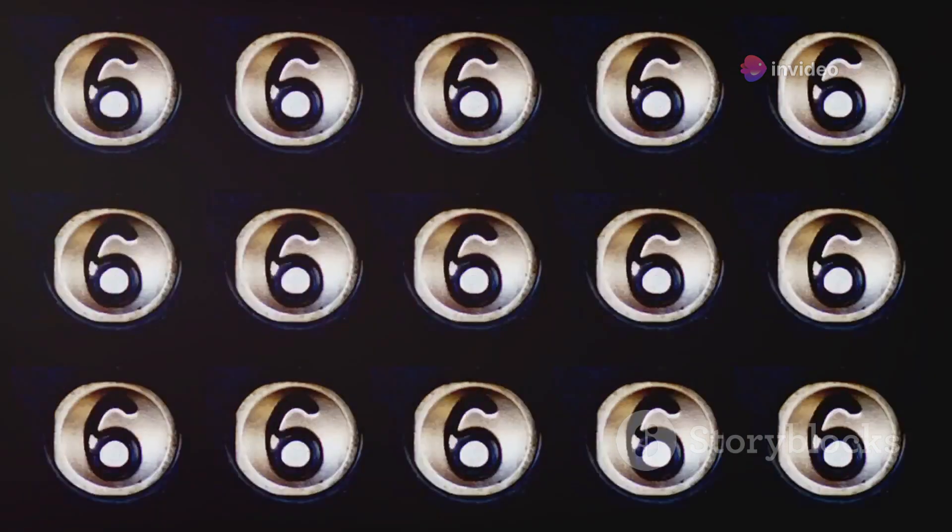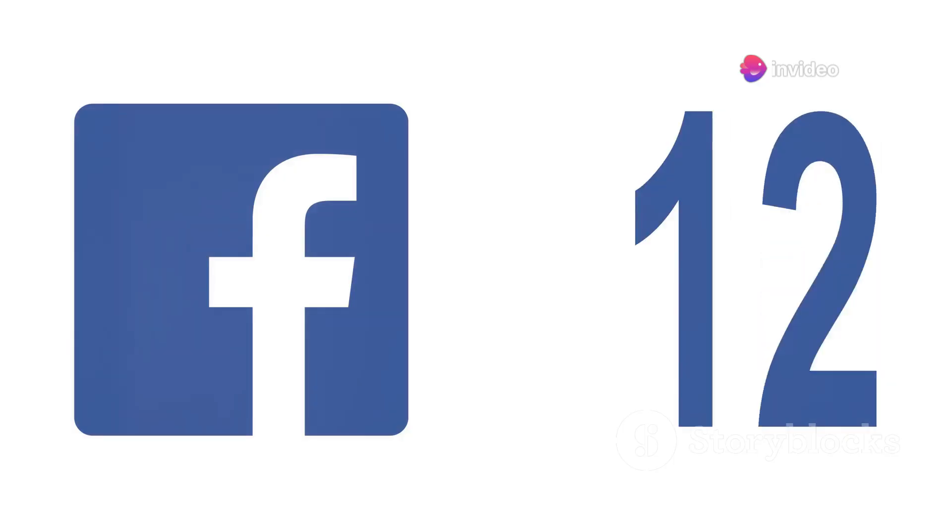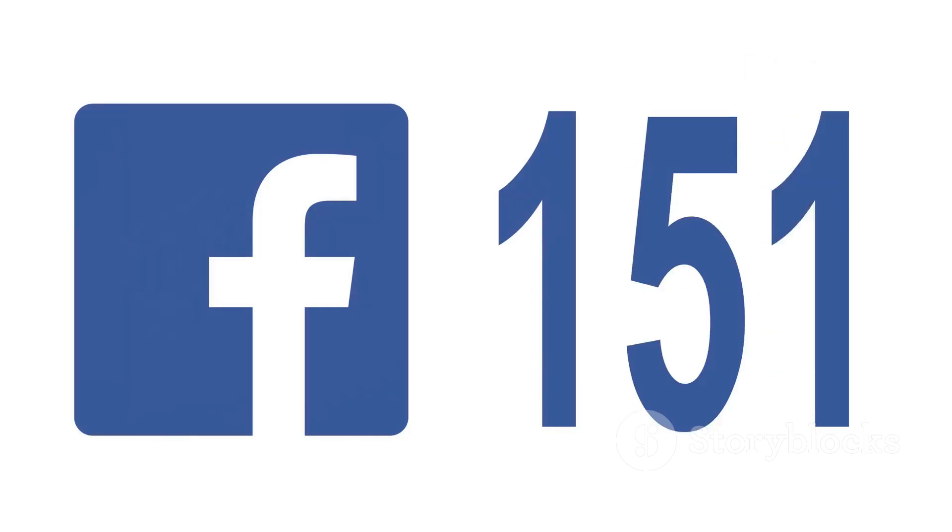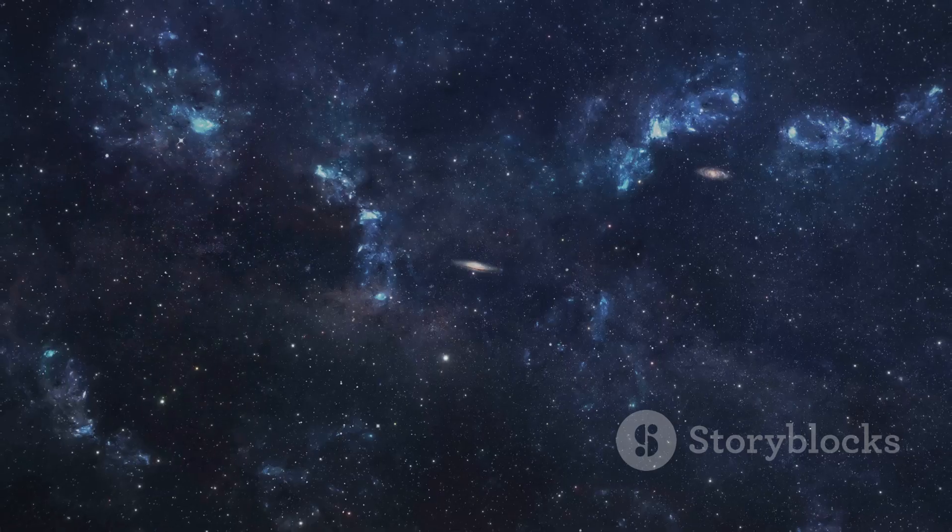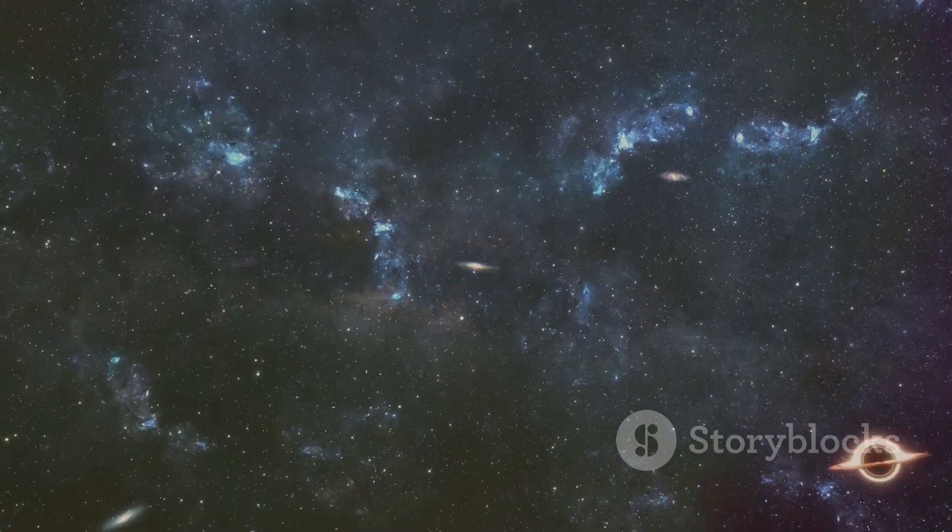This seemingly ordinary number, nestled between 36 and 38, holds a peculiar allure. It's as if it's calling out to be noticed, standing out in the crowd of numbers. It appears in various contexts, sparking curiosity and prompting us to question its significance. Why does it keep appearing? What is it trying to tell us? Is it mere coincidence or does 37 hold a deeper meaning in the fabric of our universe?